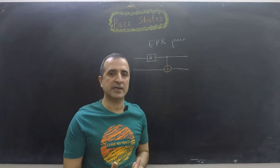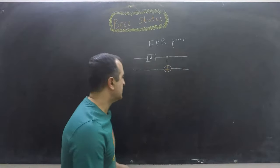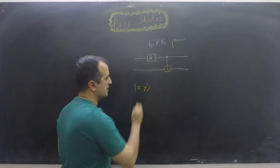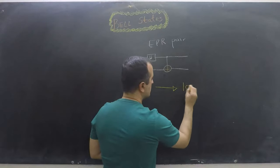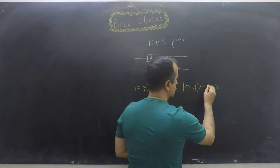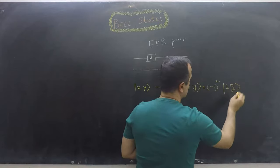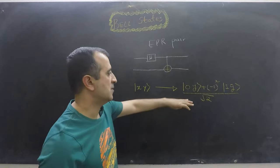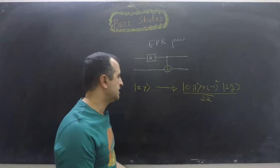There is a general formula that tells us what the output of this circuit will be based upon some input. So let's write that general formula. If my input is |xy⟩, then my corresponding output will be |0y⟩ plus (−1) raised to the power x times |1, y complement⟩, divided by the square root of 2. Based upon this general formula, I can write the four different Bell states for four different inputs.